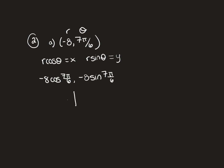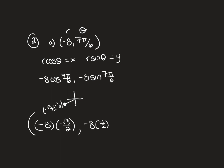The angle 7π/6 is in the third quadrant, and its unit circle ordered pair is (−√3/2, −1/2). So it's going to be negative 8 times negative √3/2 for x, and negative 8 times negative 1/2 for y. Negative 8 divided by 2 is negative 4, and a negative times a negative makes a positive, so the rectangular form is (4√3, 4).